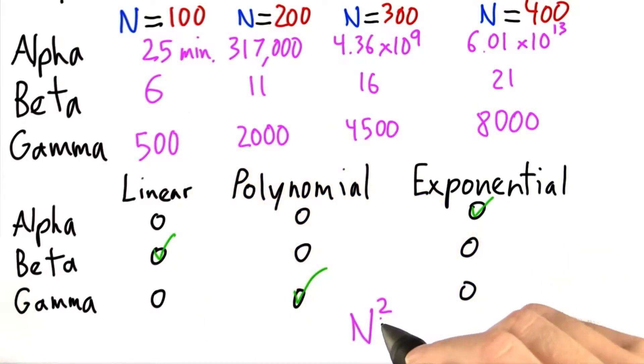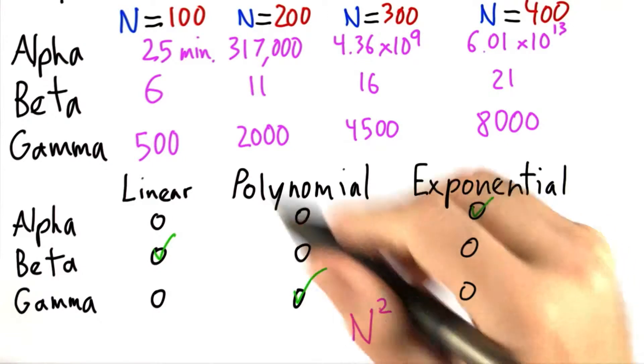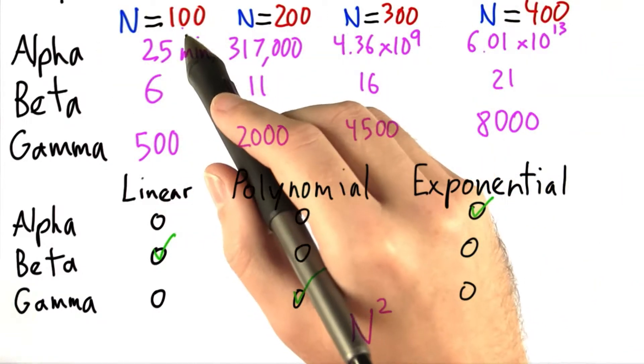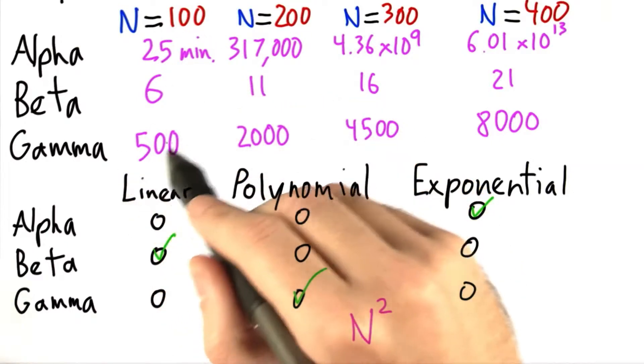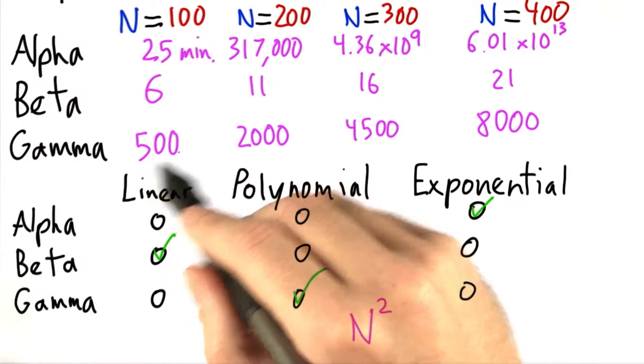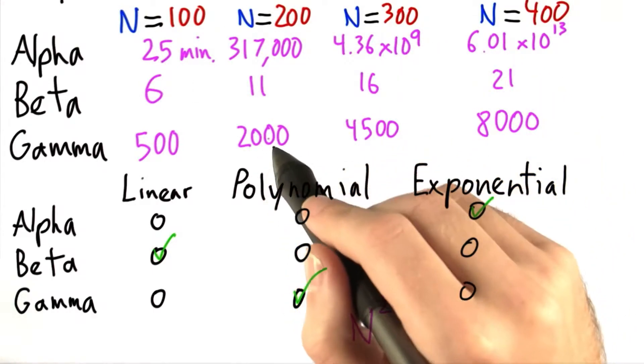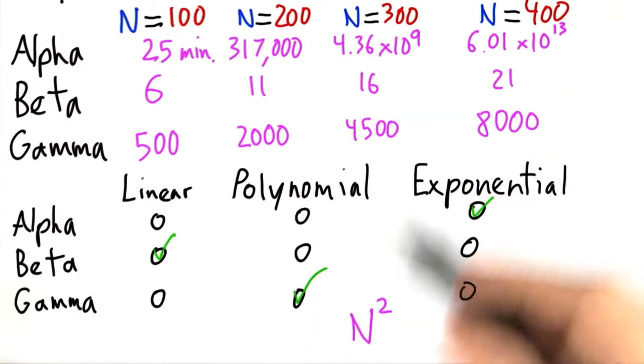Now to see this, let's take a look at N squared for these input sizes. N squared for 100 is 10 to the fourth, which is quite a bit bigger than gamma's running time. N squared for 200 is similarly much bigger than gamma's running time and on and on.